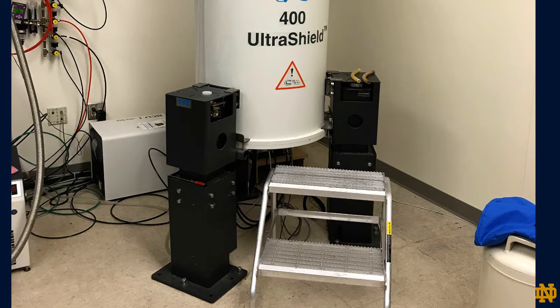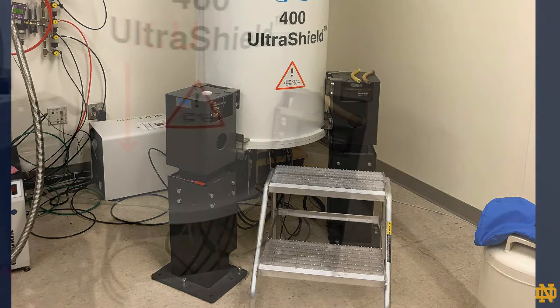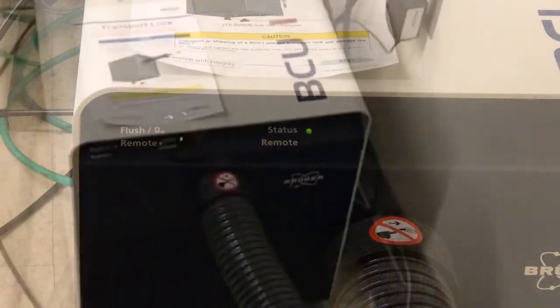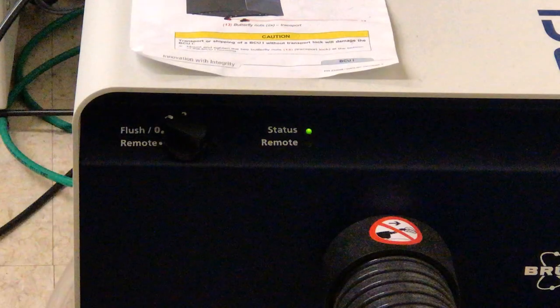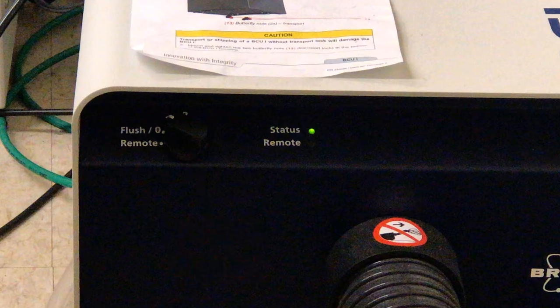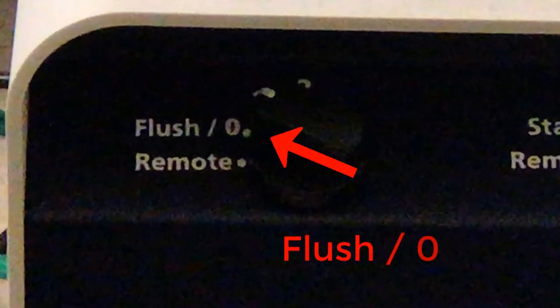Before you begin, you need to verify the current setting of the BCU1. BCU1 is located behind the magnet. Its setting is easier to view if you walk around the magnet to see its front panel. This is a manual unit. The mode switch has four positions. We are checking to ensure that selector is set to flush position or zero.